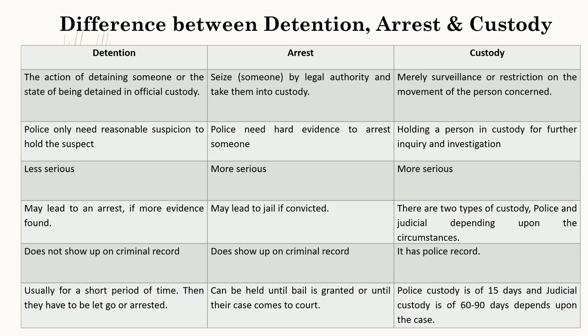An arrest may lead to jail if convicted. Custody is of two types: police custody and judicial custody, depending upon the circumstances. There is no criminal record of detention, but in arrest there is a criminal record, and in custody there is a police record. In detention, it is usually a short period of time after which the person must either be released or arrested. In arrest, the person can be held until bail is granted or until their case comes to court. In custody, police custody is of 15 days and judicial custody is of 60 to 90 days depending upon the case.